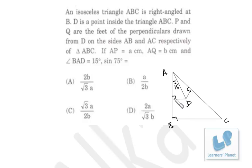See, this is 90° and this is 15°, so this angle must be 75°. Now this length AP and AQ—AP is given to be A and AQ is given to be B.